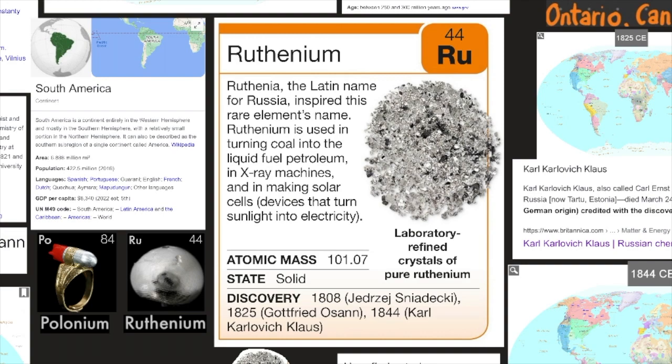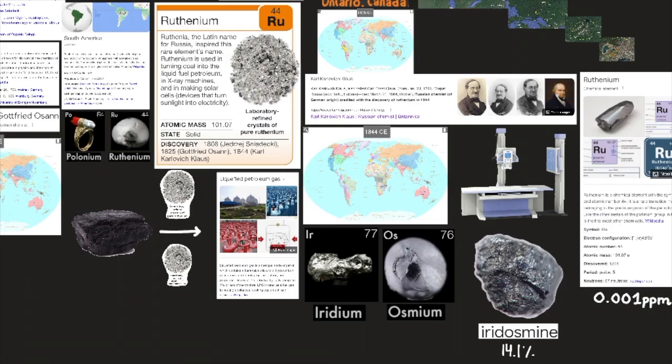Ruthenia, the Latin name for Russia, inspired this rare element's name. Ruthenium is used in turning coal into the liquid fuel, petroleum, in x-ray machines, and in making solar cells, devices that turn sunlight into electricity. Here are laboratory refined crystals of pure ruthenium.